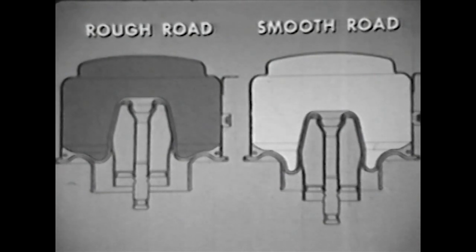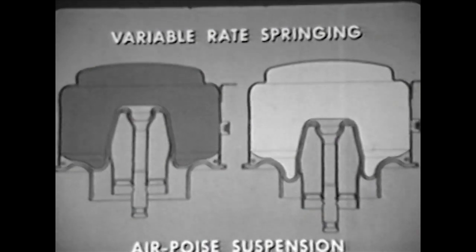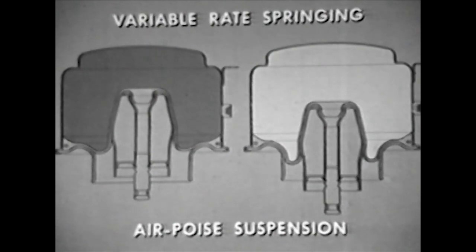The smoother the road, the less the resistance. So there's a constant cushion of air with just the right degree of resistance to wheel bounce at every instant. This constant cushion of air is responsible for variable rate springing, the first of the three big sales advantages of air poised suspension.